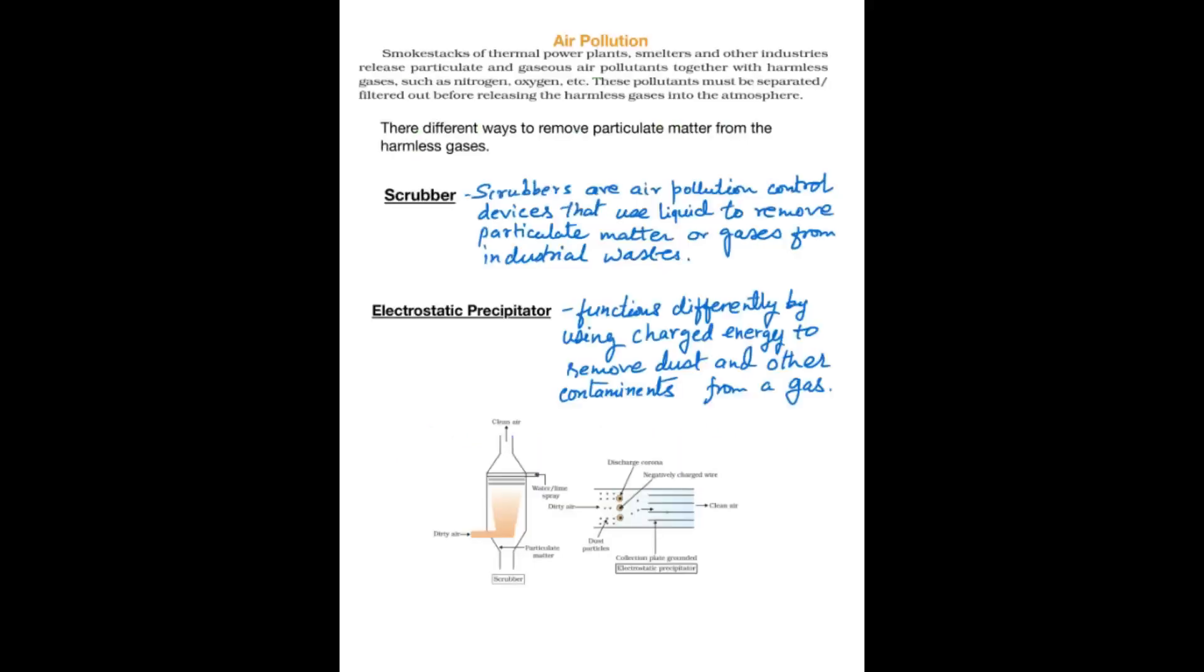As we all know, industries and thermal power plants exhaust dirty air having particulate matter and poisonous gases. There are methods through which these industries treat their exhaust gases before discharge to the environment. The methods mentioned in NCERT are scrubber and electrostatic precipitator. We will be discussing these two methods.